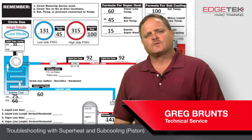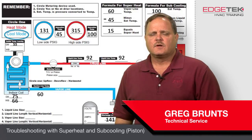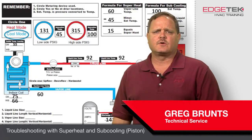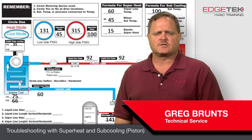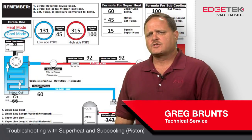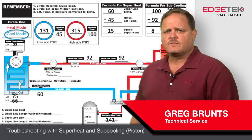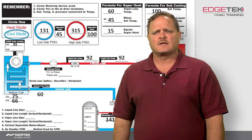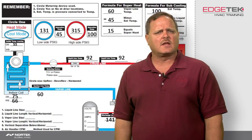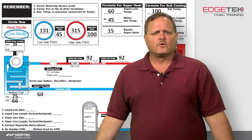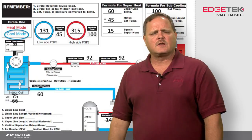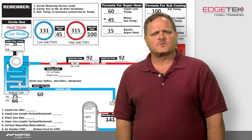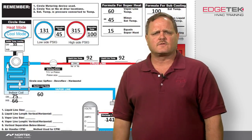Hi, Greg Brunce here with another useful tip for you. Today we're going to talk about using subcooling and superheat to troubleshoot a heat pump system or air conditioning system. On the screen behind me I've got a job checkout sheet that we use in tech service all the time. It gives us a place to lay out all the numbers with a full system showing the indoor and outdoor unit along with all the readings we got, so we know what's going on with that system.